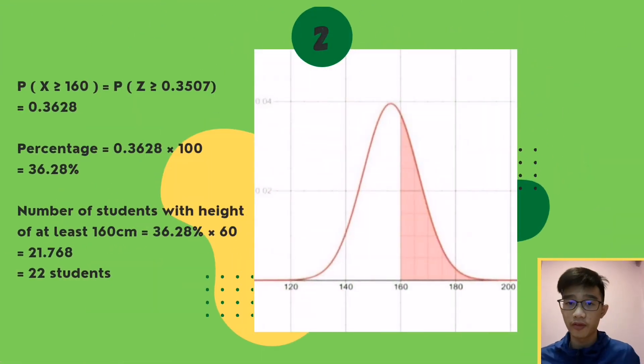Range 2: Find the probability of Form 1 students with a height of at least 160 cm. If x is 160, the z-score is 0.3507 and the value of standard normal distribution is 0.3628. Multiplying by 100 gives 36.28% of students. When we multiply the percentage by 60 students, we get 21.768, which rounds off to 22 students.